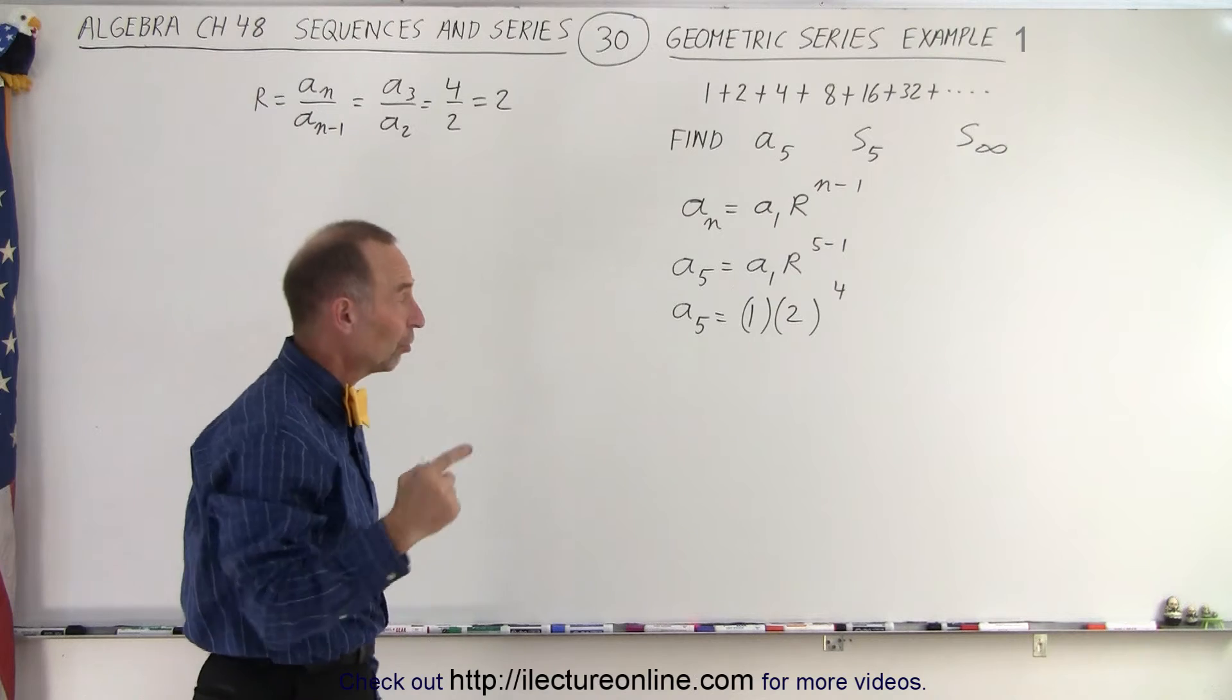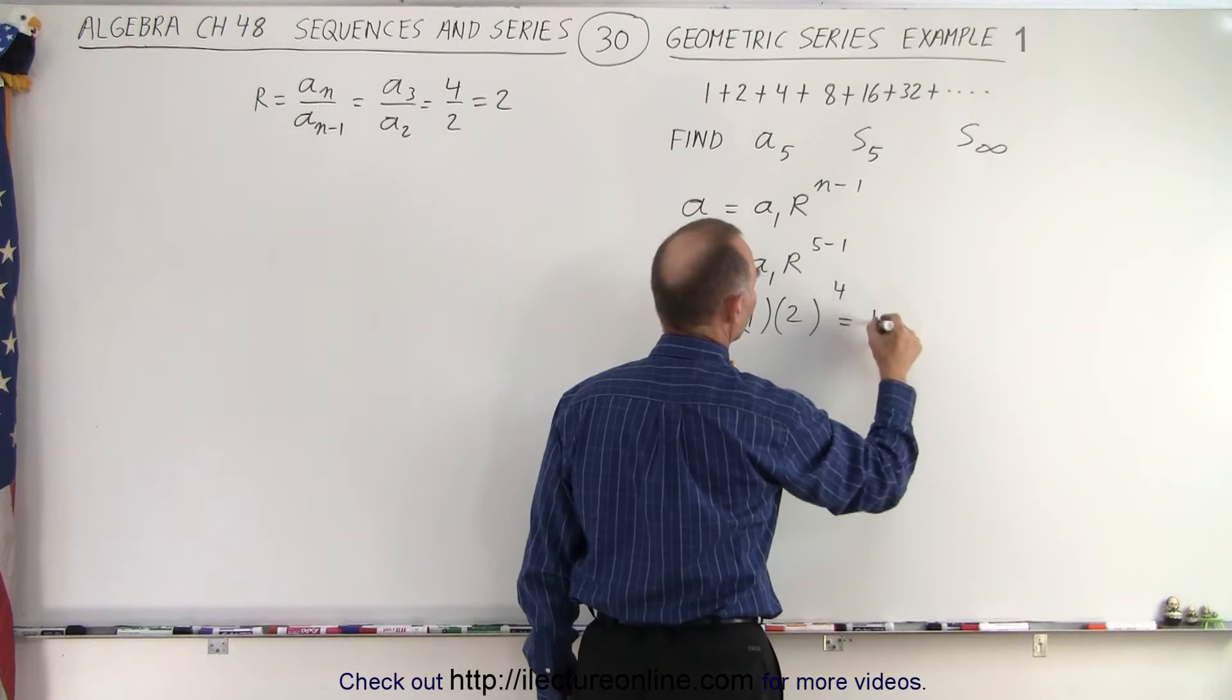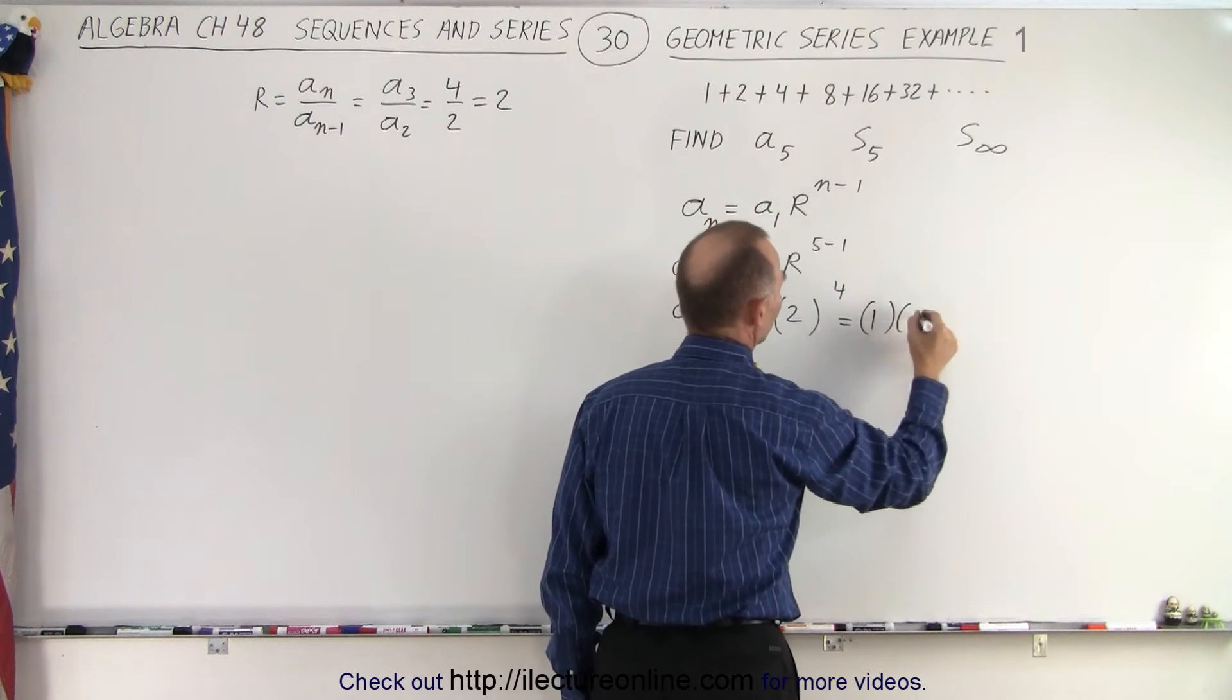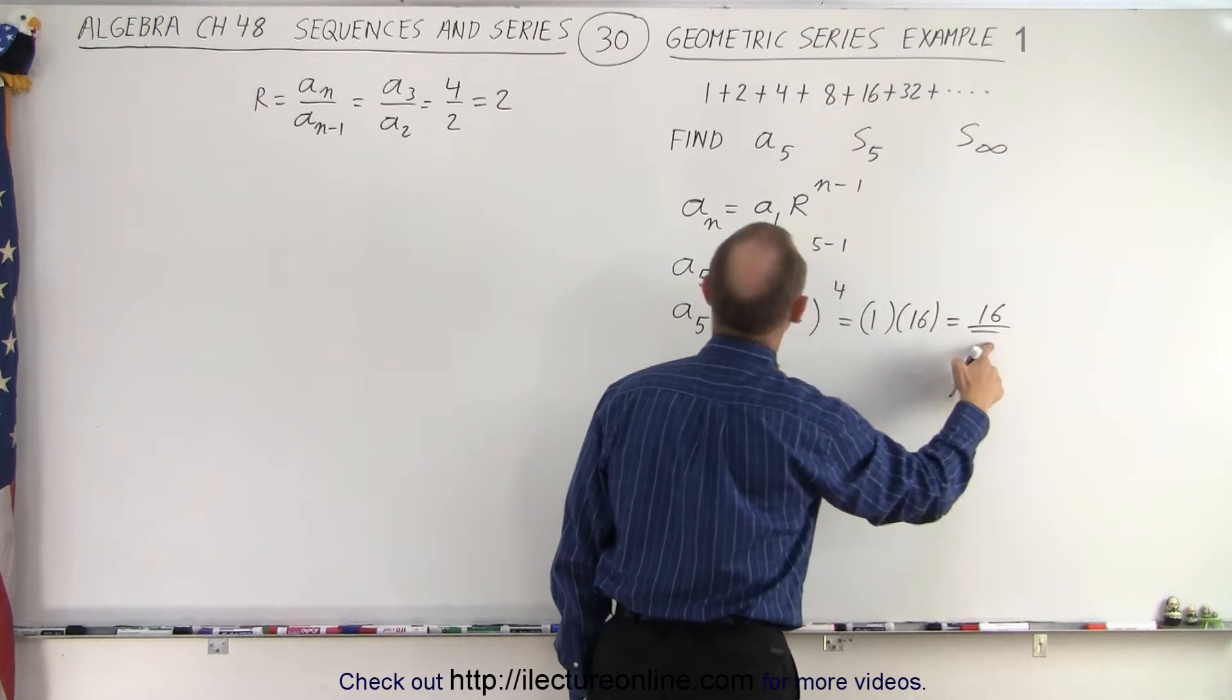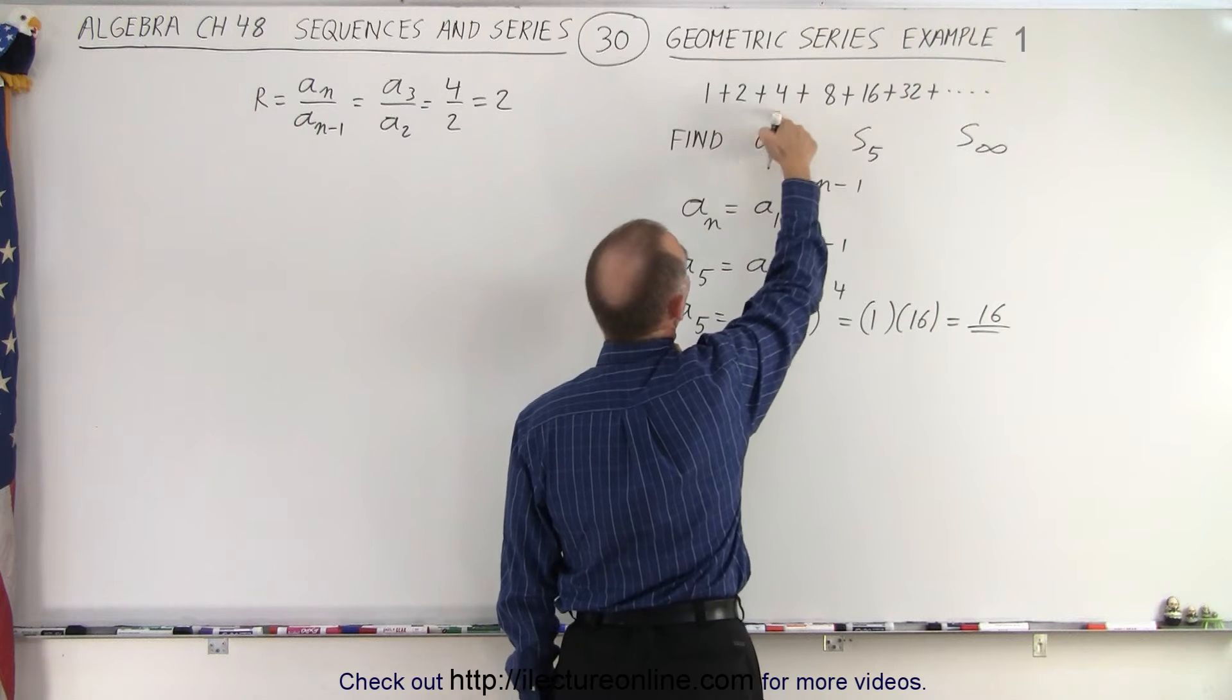Now we're ready to solve for the problem. This is equal to 1 times 2 to the fourth power, which is 16. So the fourth number in the series is 16. 1, 2, 3, 4.